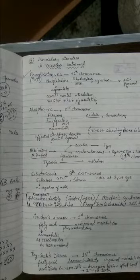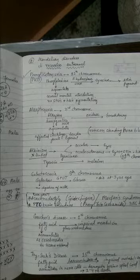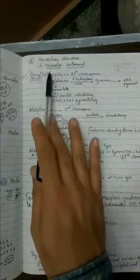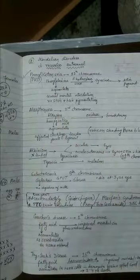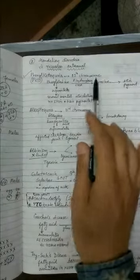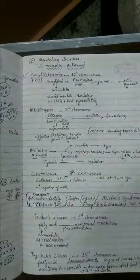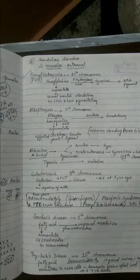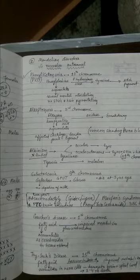The next one in the NCERT is phenylketonuria. Phenylketonuria is also a recessive autosomal disorder. Recessive because there is a dominant normal gene. Why autosomal? Because 12th chromosome is the carrier of this gene, so it is an autosomal disorder.